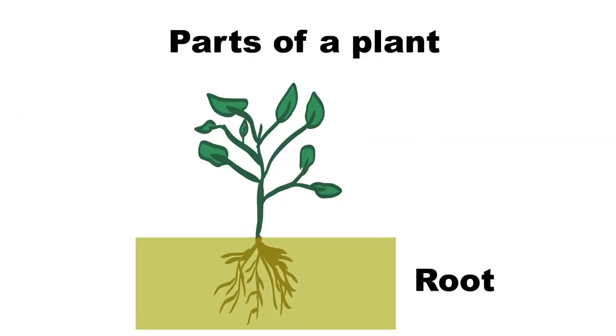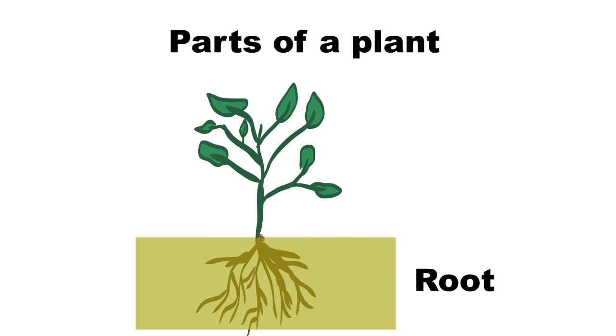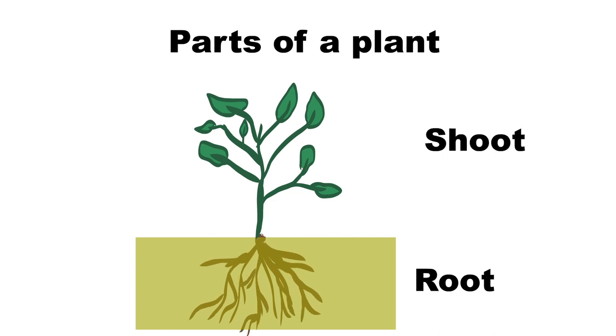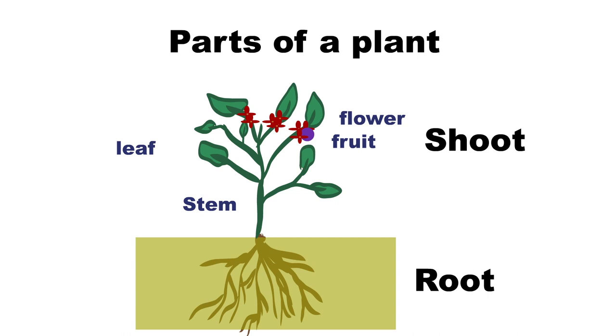The parts of the plant are root and shoot. The shoot contains a stem, leaf, flower and fruit.